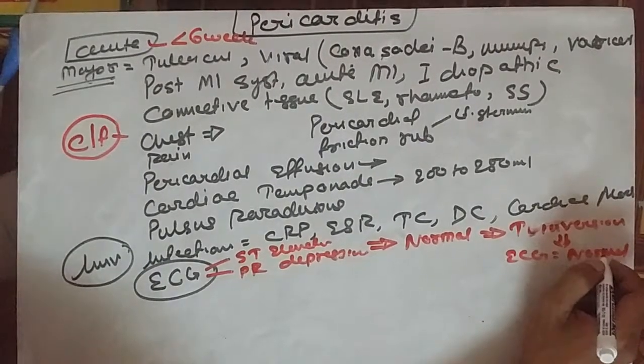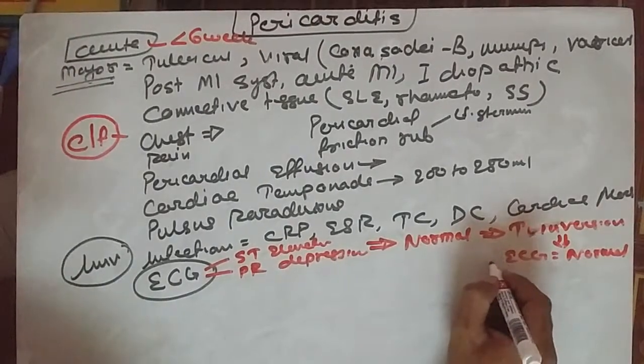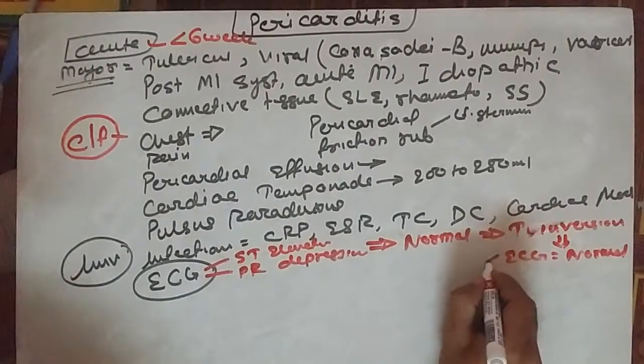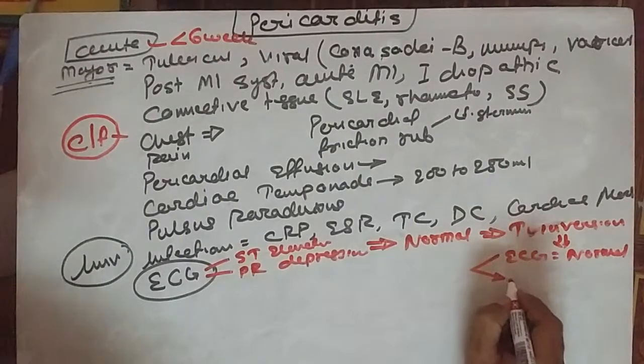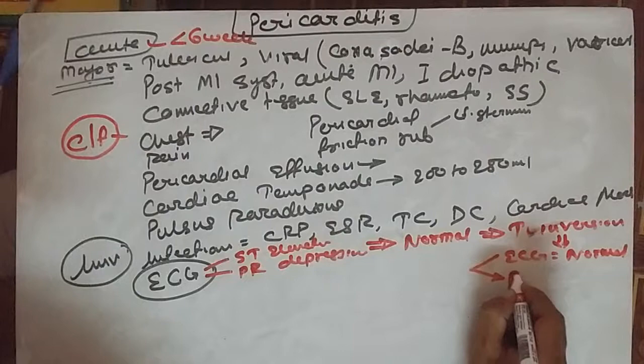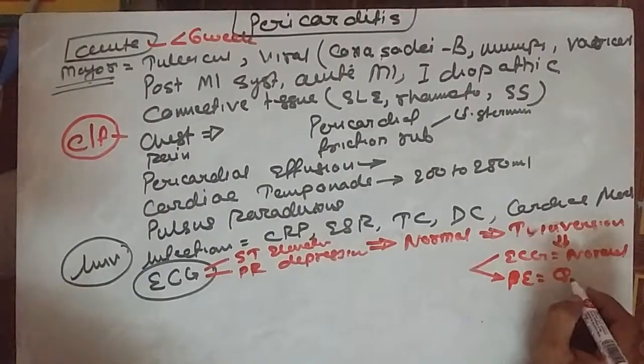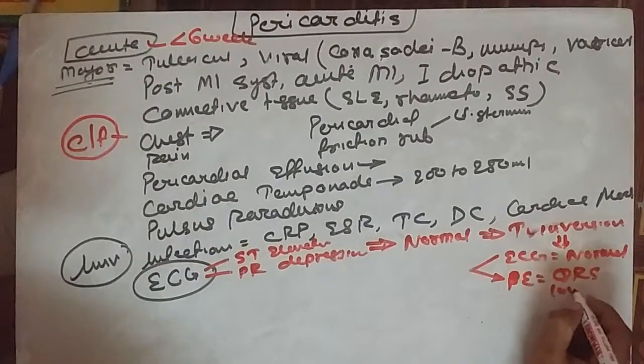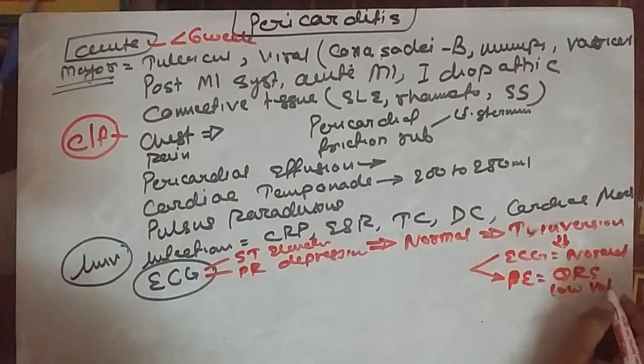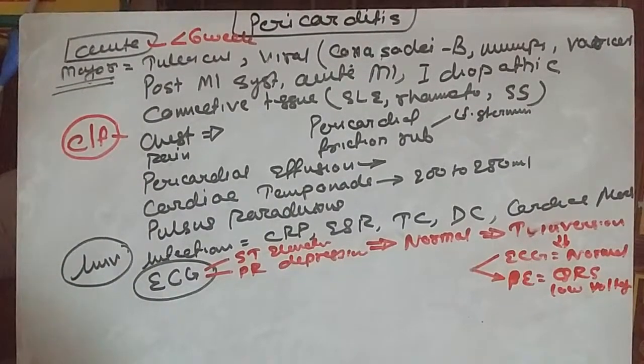In the late stage, if the person is recovering, ECG becomes normal. If the person develops pericardial effusion, the QRS complex will show low voltage.